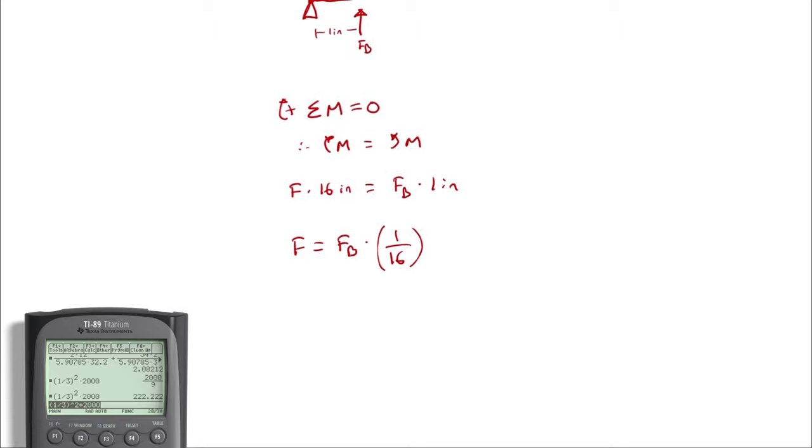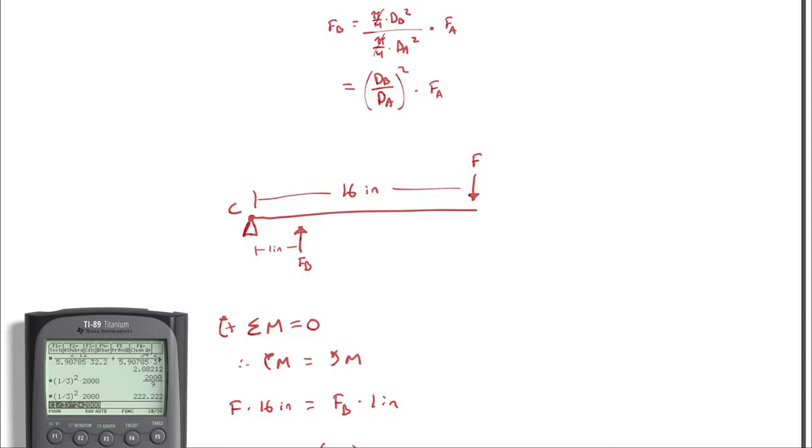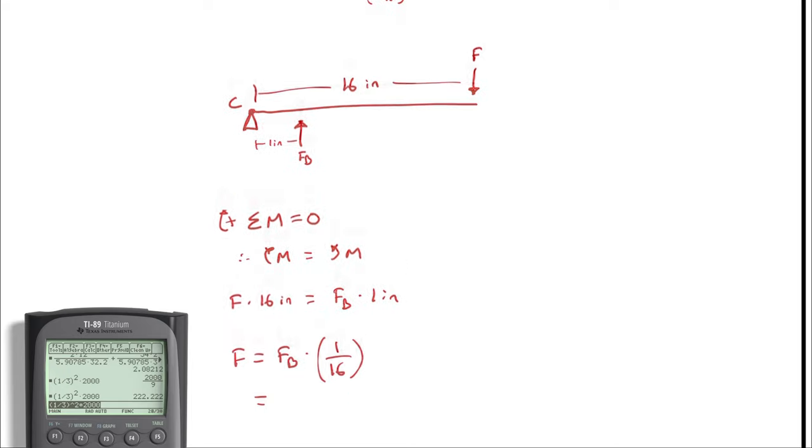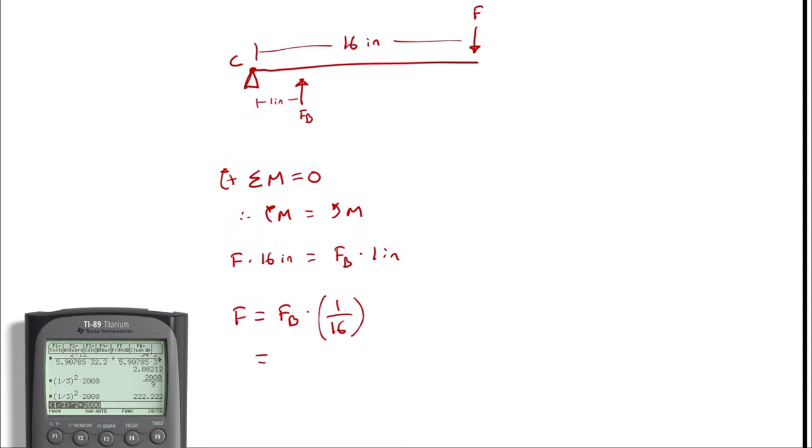If I had wanted to, I could leave FB as diameter B over diameter A squared times FA and handle all of this in a single calculation.